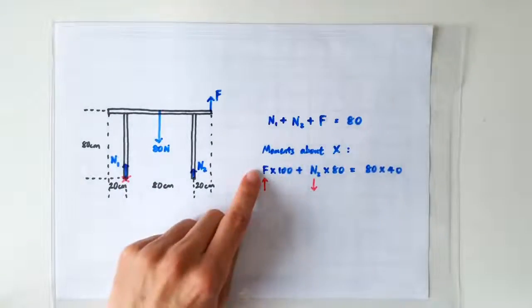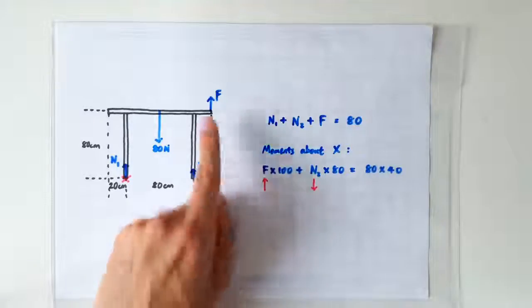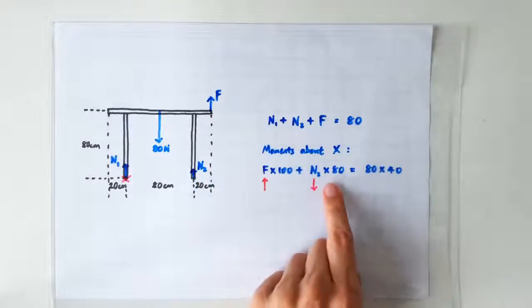So you can see that if we gradually increase the lifting force F, then the normal contact force on the right leg of the table must gradually decrease.